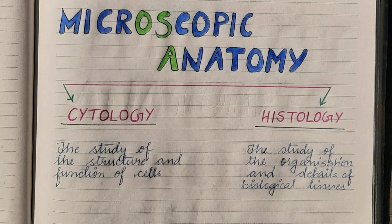The next term is histology. Histology is again derived from two words: 'histos' and 'logos,' where histos means tissues and logos means study. So the study of the organization and details of biological tissues is called histology.